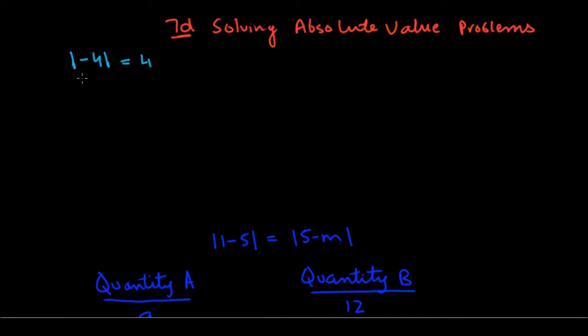So a negative number becomes positive. If you had a positive number to begin with, it will just stay as a positive number. So these are the absolute value bars.